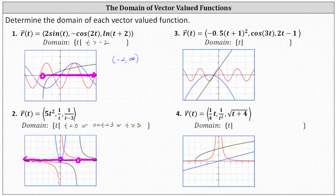Using interval notation, we have the open interval from negative infinity to zero, union the open interval from zero to three, union the open interval from three to infinity.